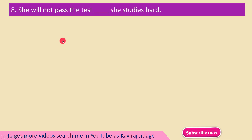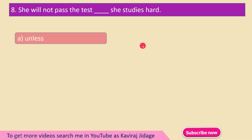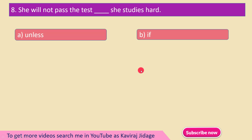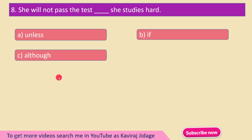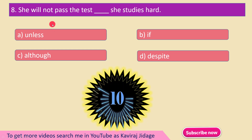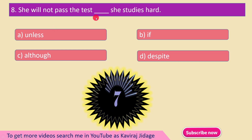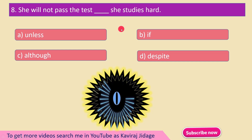She will not pass the test ___ she studies hard. A) Unless, B) If, C) Although, D) Despite. The correct answer is option A — Unless: she will not pass the test unless she studies hard.